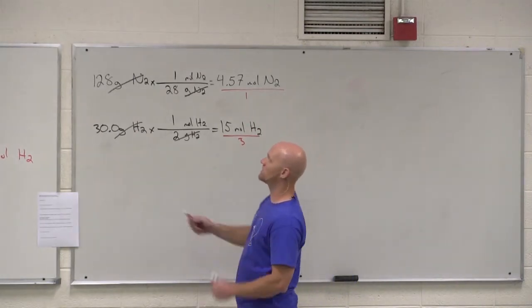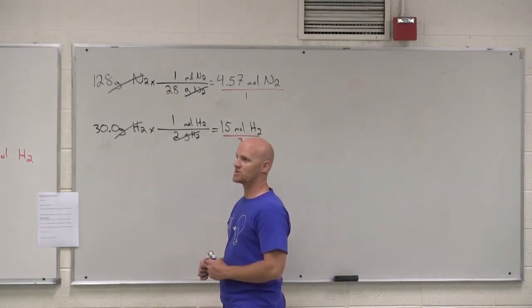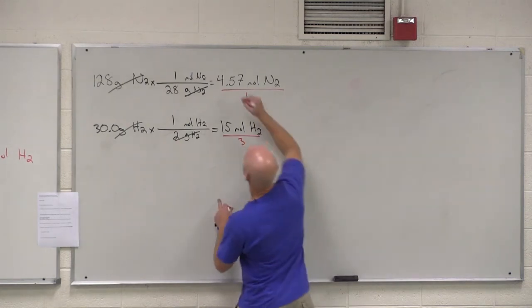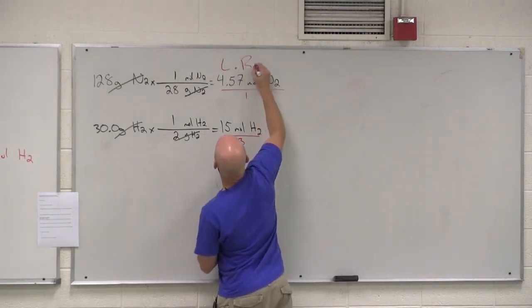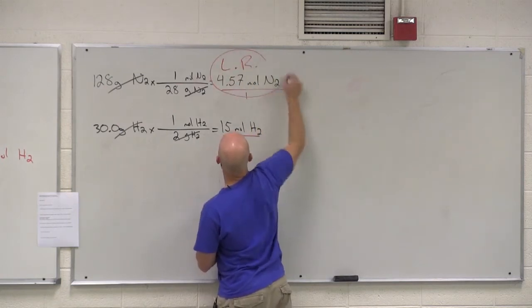And so, in this case, was hydrogen your limiting reagent just like your intuition told you? It was not. So, this is my limiting reactant here, the 4.57 moles of N2.